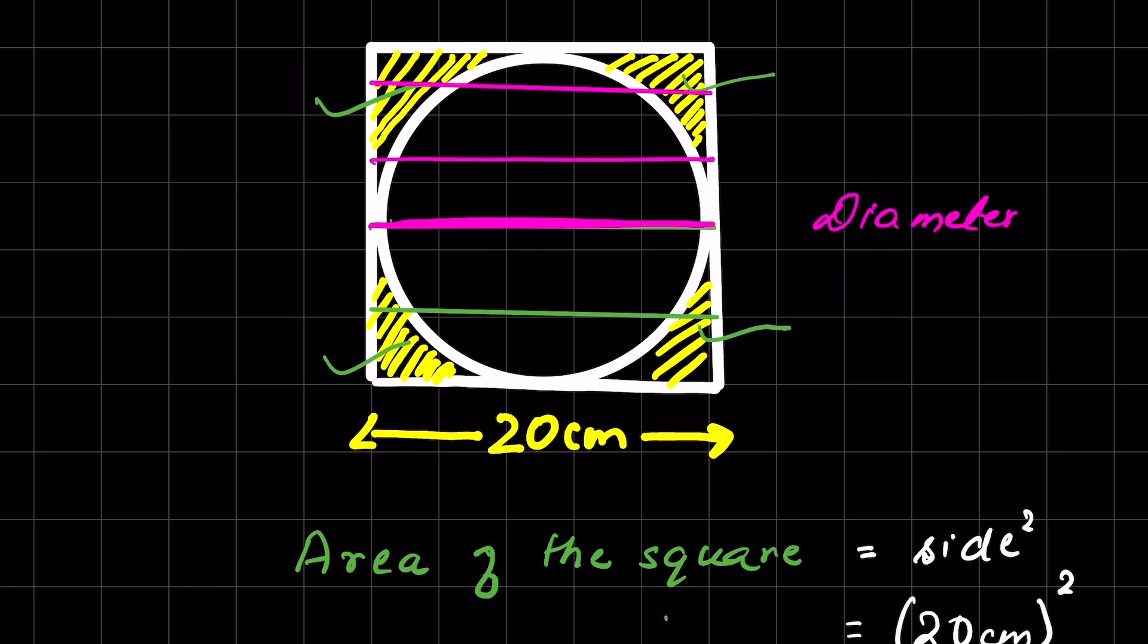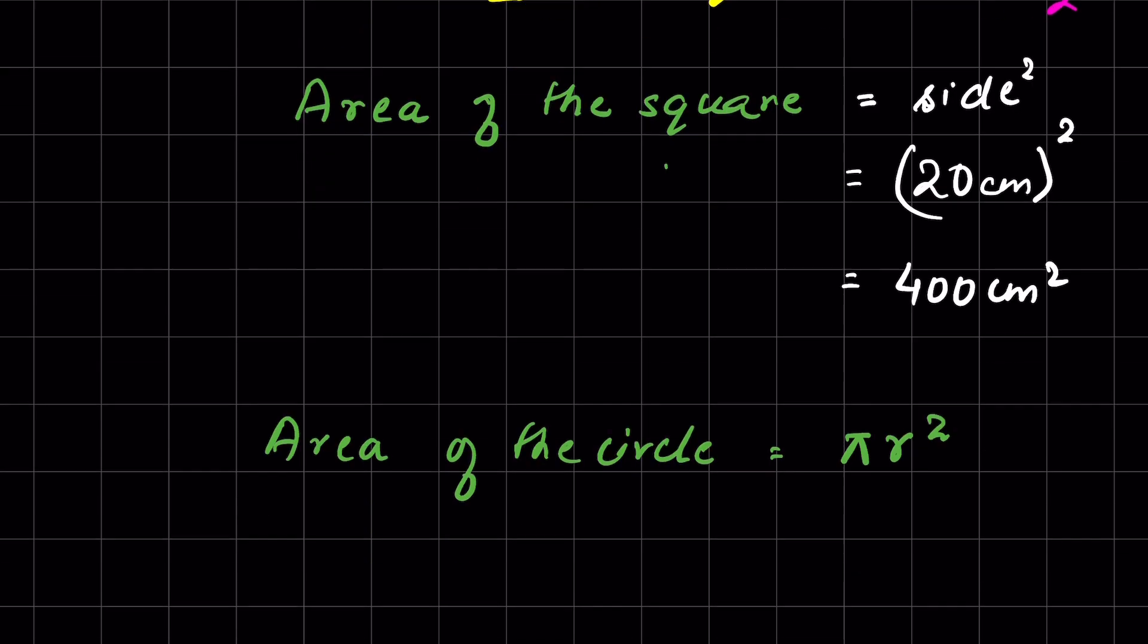If the diameter of the circle is 20 centimeters, the radius will be half of the diameter. So radius equals diameter divided by 2, which is 20 divided by 2, that equals 10 centimeters.